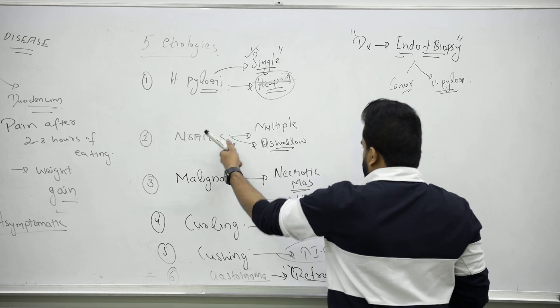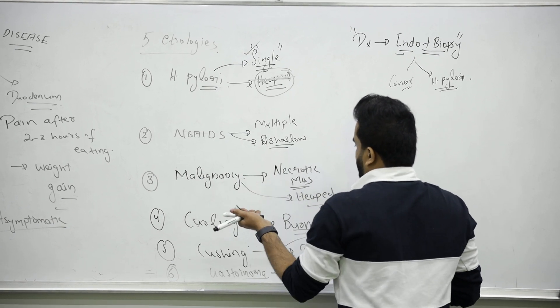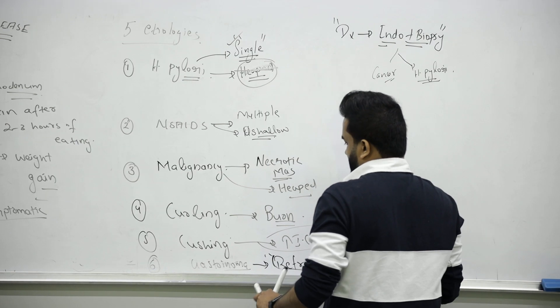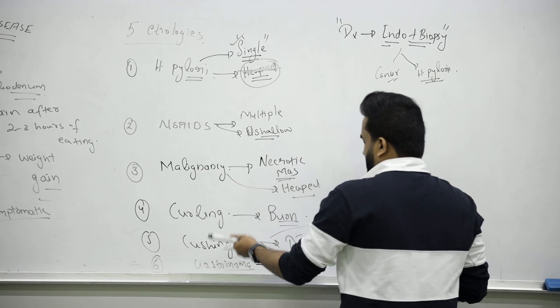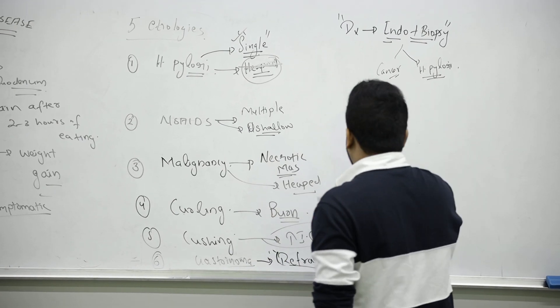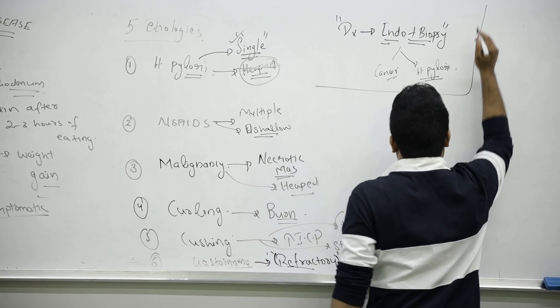If using NSAIDs causes ulcer, stop it. If malignancy, we do resection. For other reasons like Curling, we know the cause so we will manage accordingly. First, very important one, we talk about Helicobacter pylori.